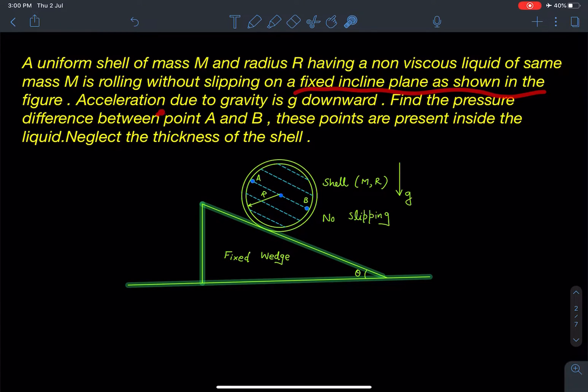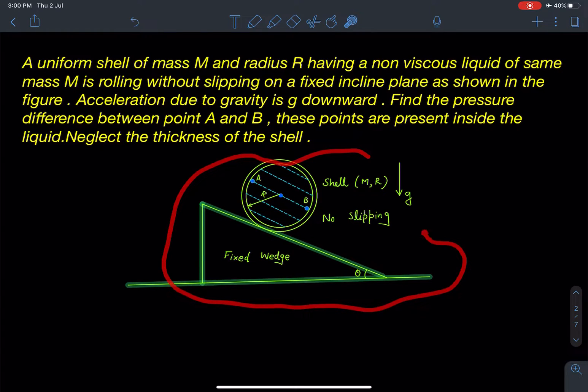Acceleration due to gravity is g downward. Find the pressure difference between point A and point B. These points are present inside the liquid. Neglect the thickness of the shell. So you can refer the diagram for the same. Here the key point will be liquid is non-viscous, so it means this liquid within this is not going to rotate as the shell will perform combined motion. Liquid will just translate alone.